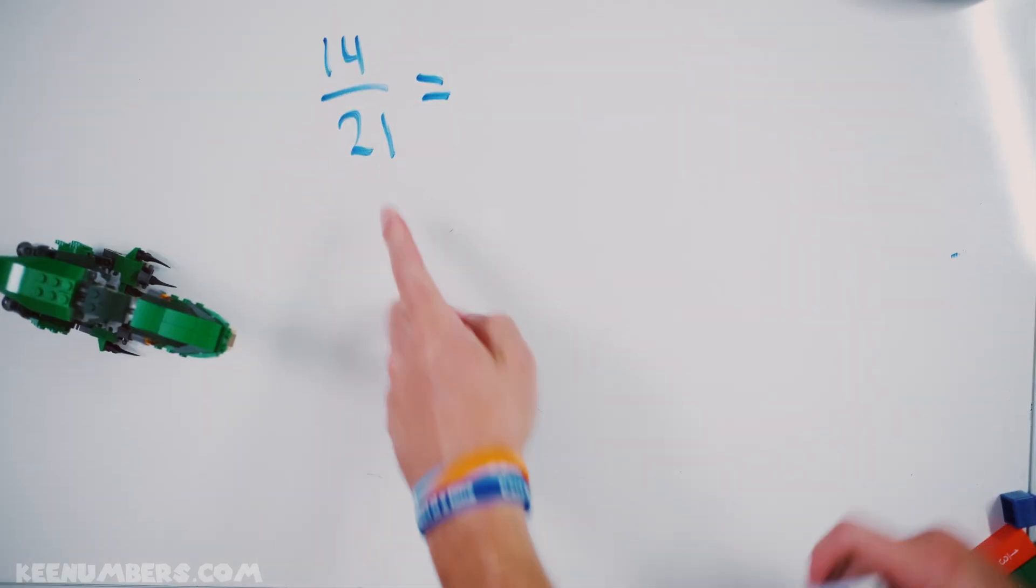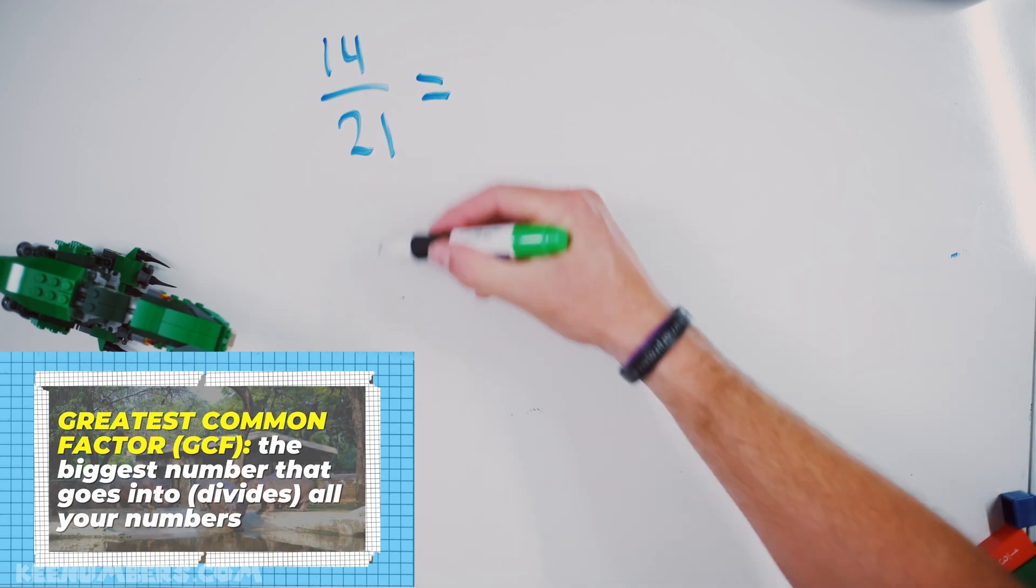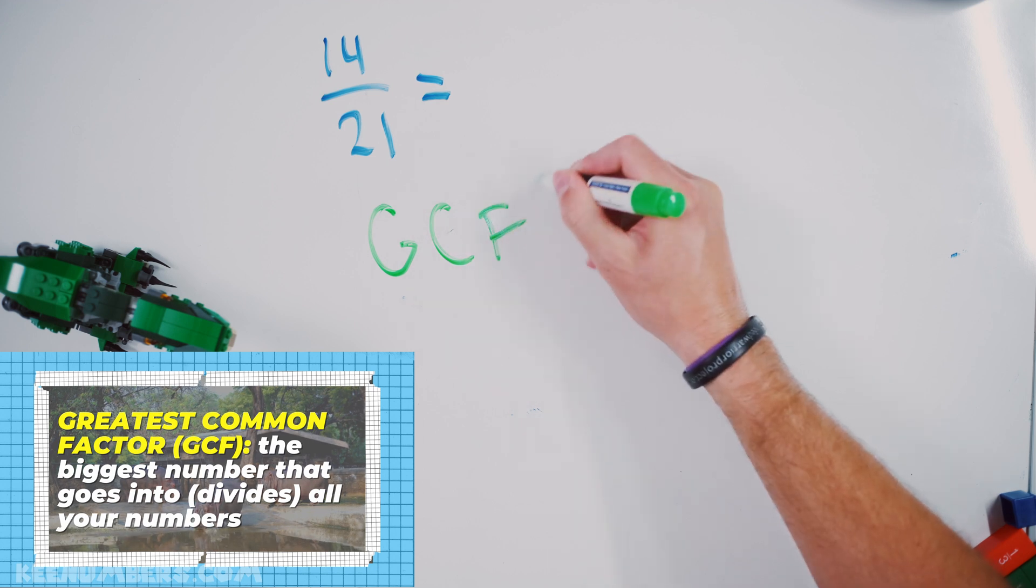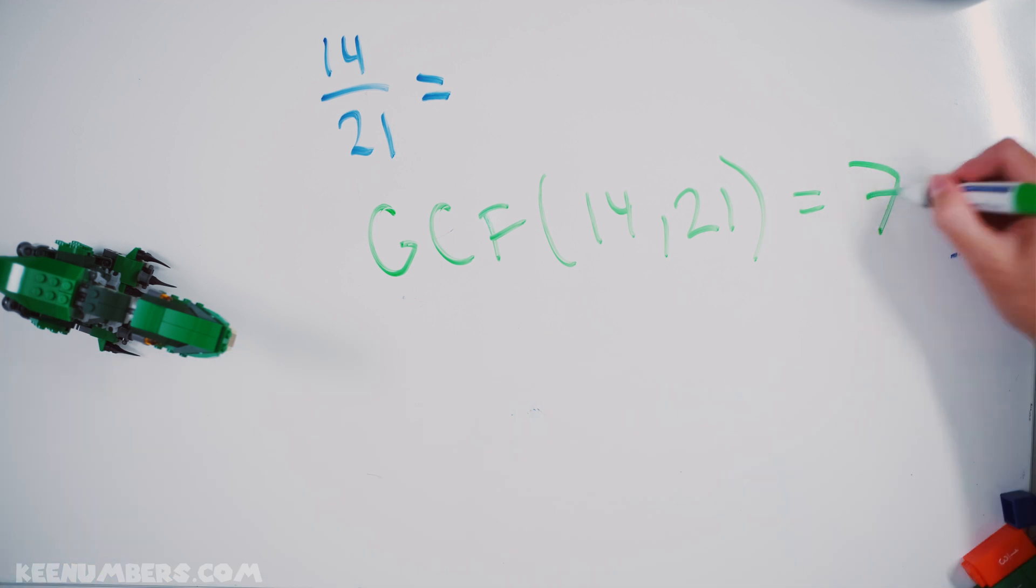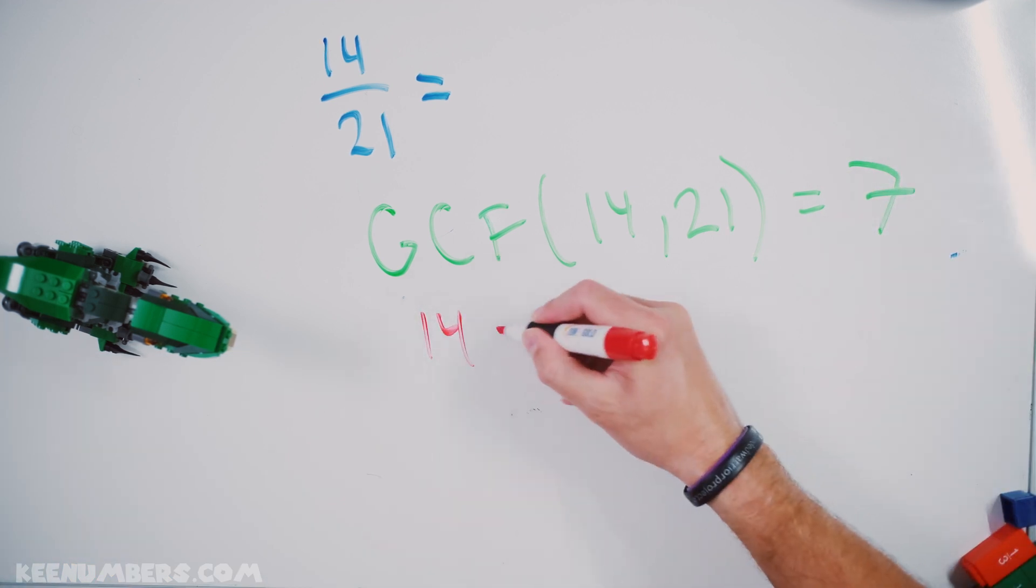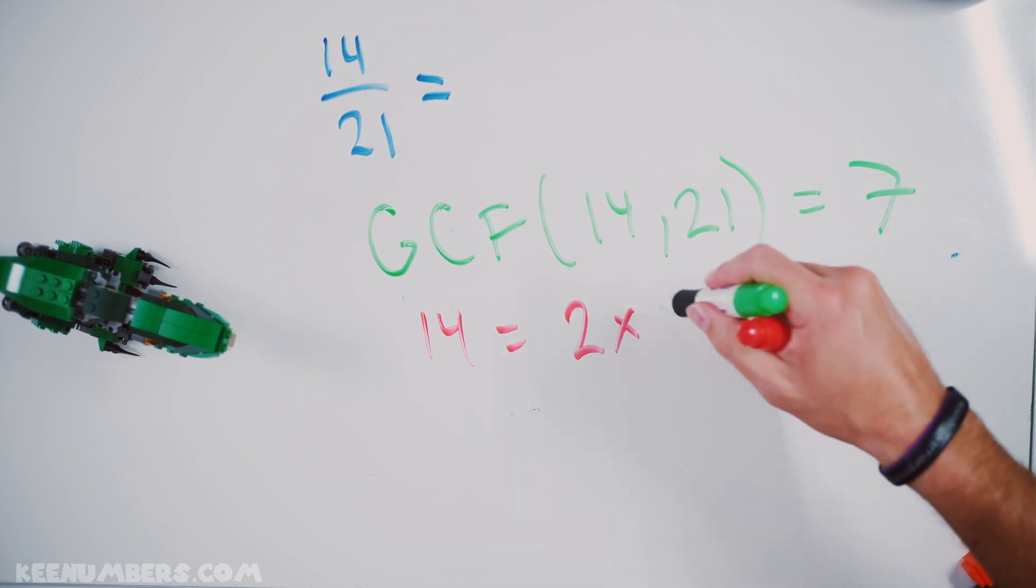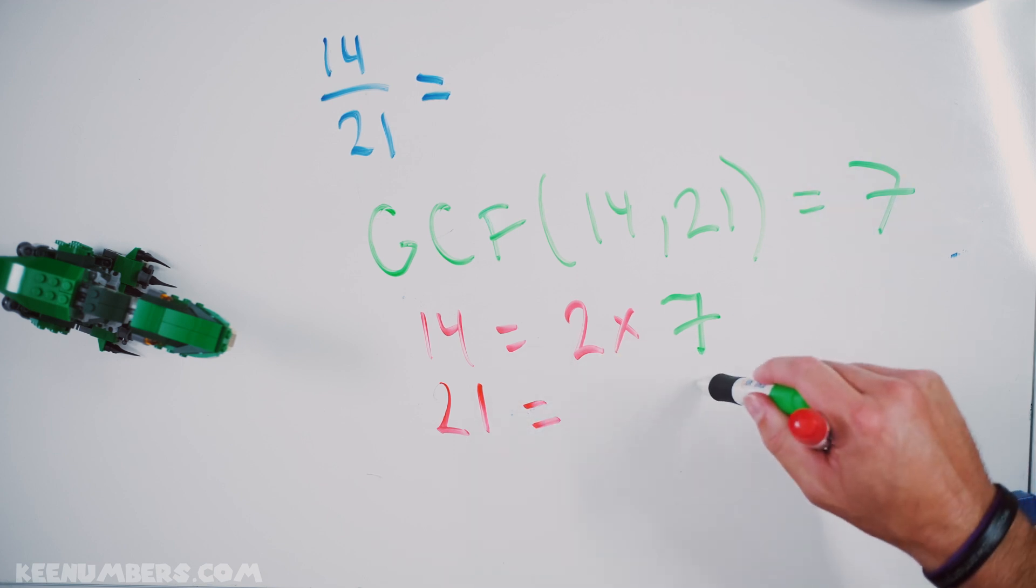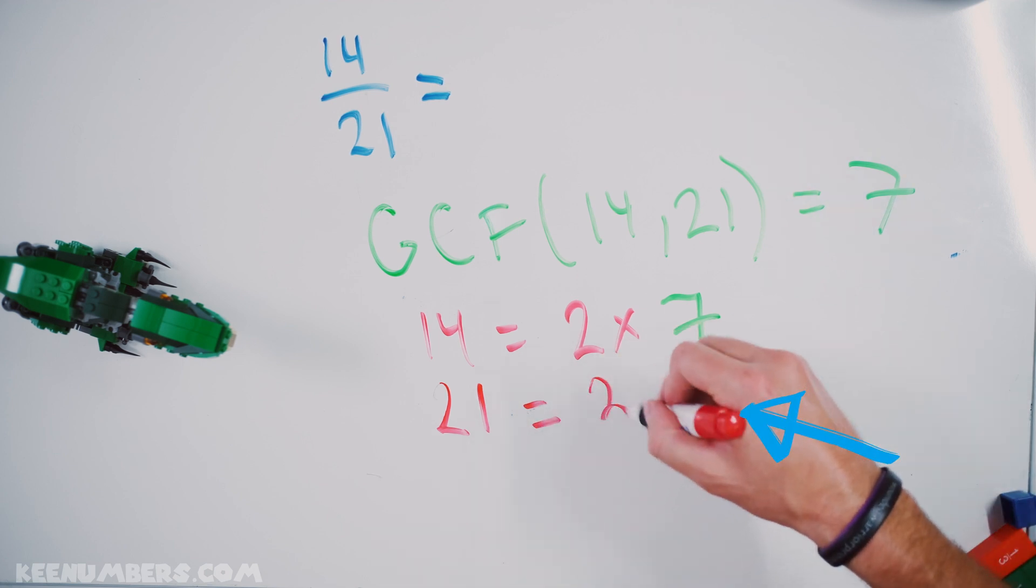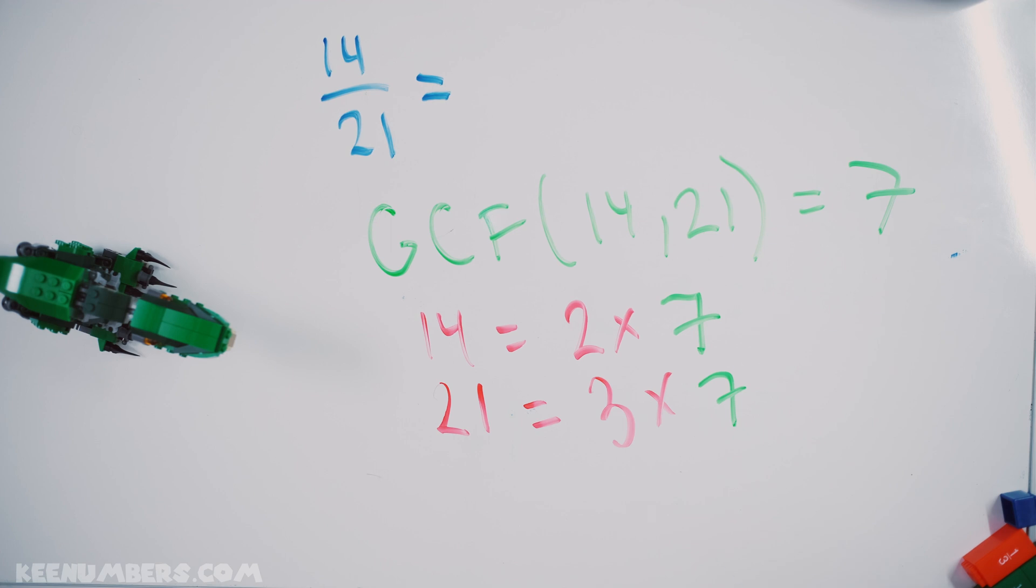Let's simplify 14 over 21. Well, the good news is that the greatest common factor of both 14 and 21 is seven! Why is it seven? This is not hard. 14 is two sevens. And 21! How many sevens? You bet! Three sevens!